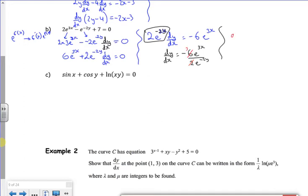The 6 and the 2 both cancel to leave a 3. So I know that dy by dx is minus 3 times something. I've got the e to the 3x. Now then, this e to the minus 2y I'm going to take up to the top. And if you remember, if I take it up to the top, that changes the sign on the power.